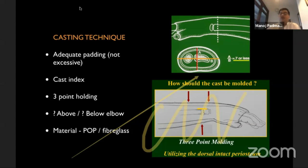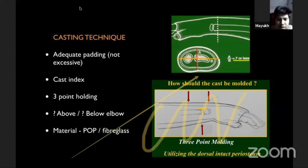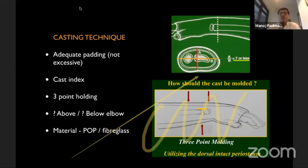Regarding cast material, most of us routinely apply POP, mold it, and then reinforce with fiberglass. There is evidence that primary fiberglass casting is more than adequate, but I would advise using POP as it allows a little more soft tissue breathing and is easier to remove if needed.